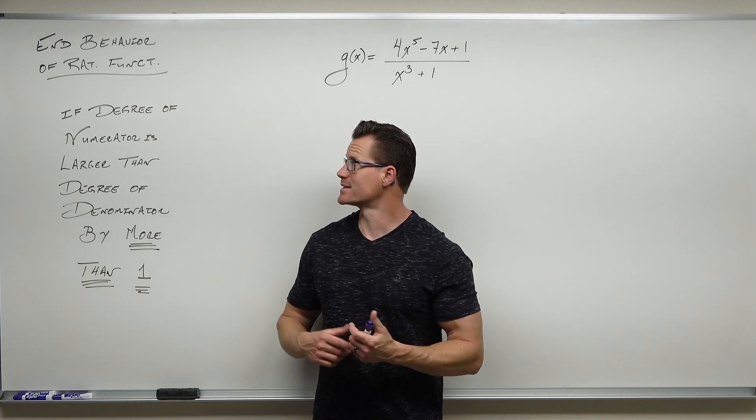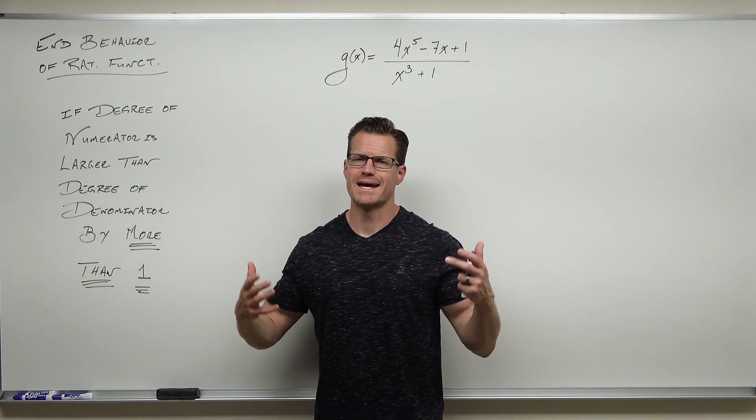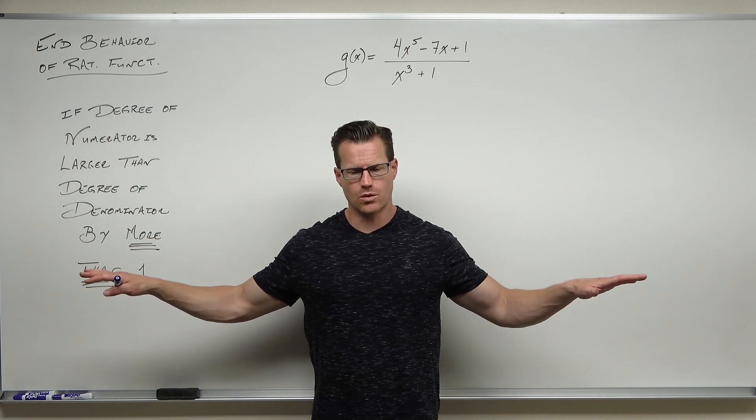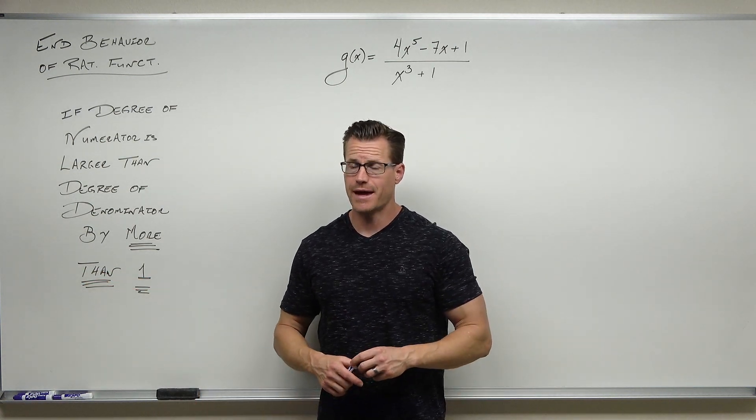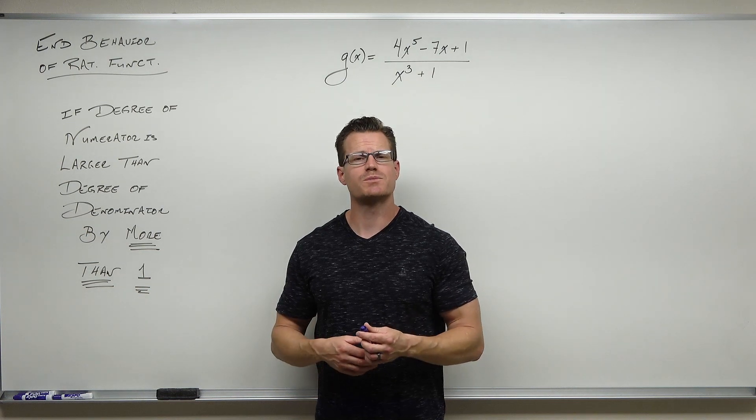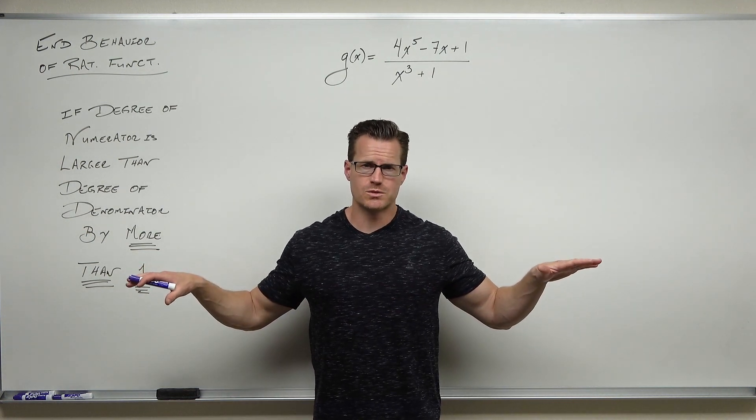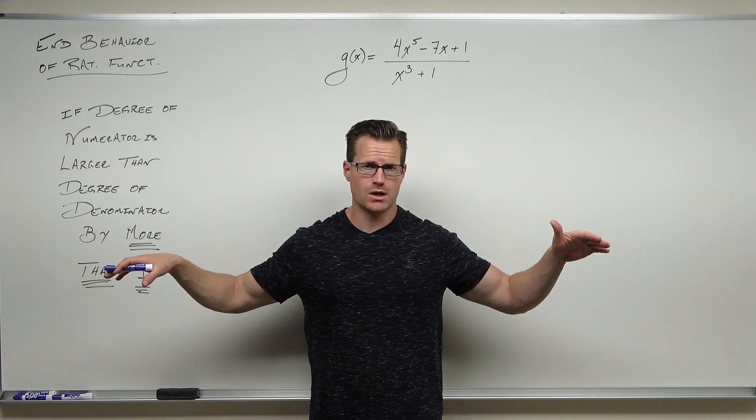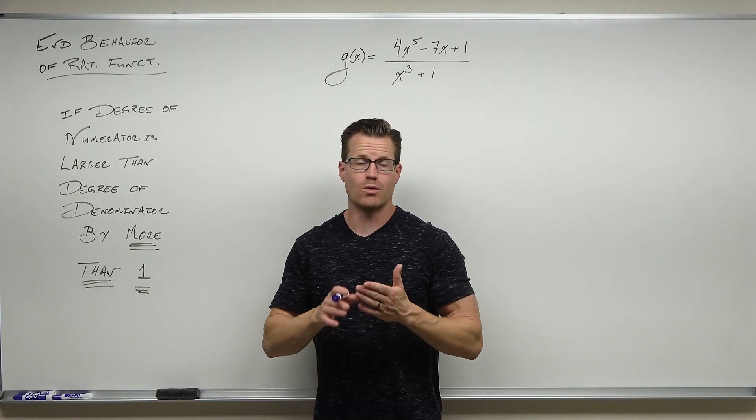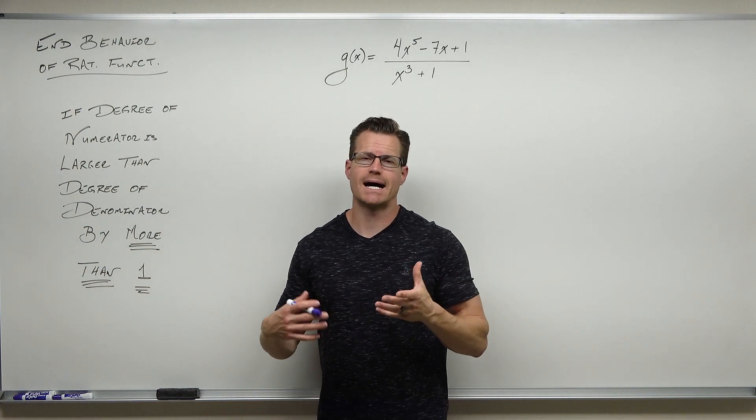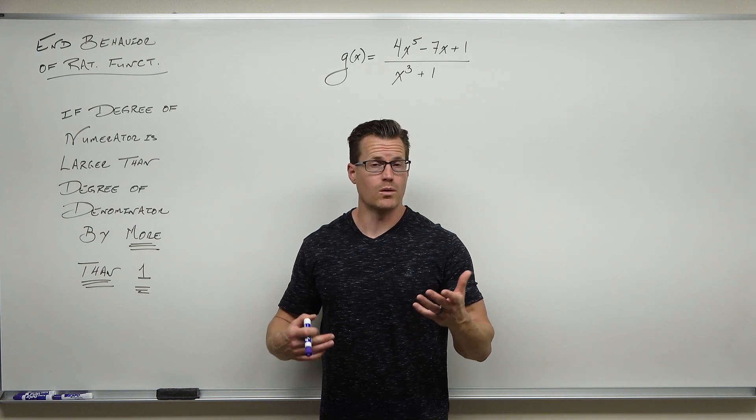It's a little deceiving because the title is end behavior of rational functions. I do want to tell you that horizontal asymptotes or an oblique asymptote, that is also end behavior. They're just special cases. So this is the case where what if a horizontal asymptote at y equals zero or y was a constant, or an oblique asymptote at y equals some sort of linear function, does not happen. So what would that look like?